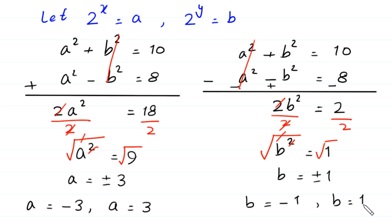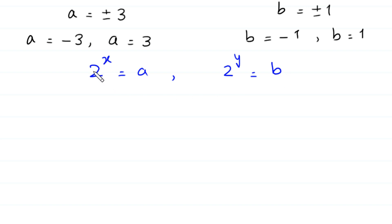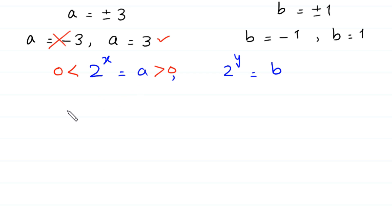Recall that we supposed 2 to the power x is equal to a and 2 to the power y is equal to b. Now, from here you can see that 2 to the power x is greater than 0, so a must be greater than 0. The value a equals negative 3 is less than 0, so we reject it. We only accept a equals positive 3, and we put this value into the equation: 2 to the power x is equal to 3.